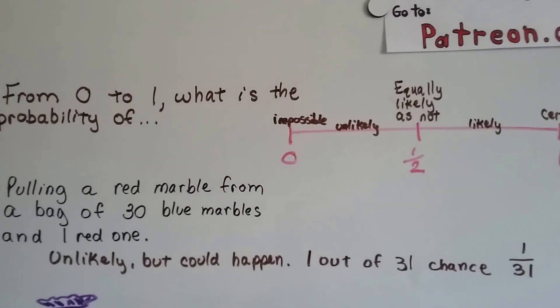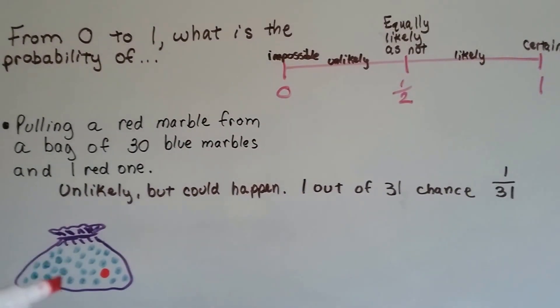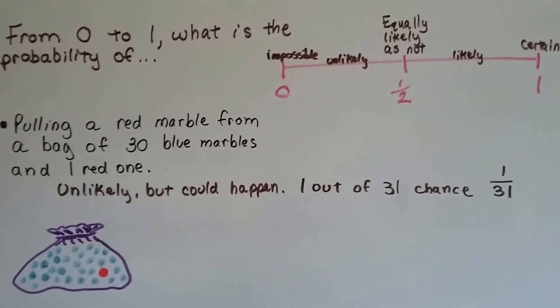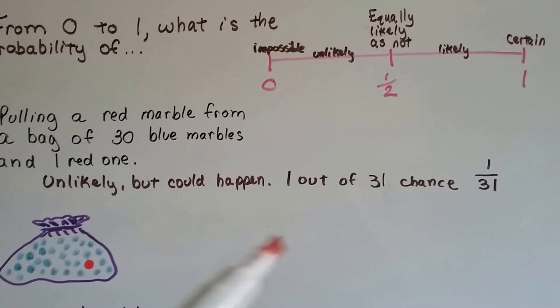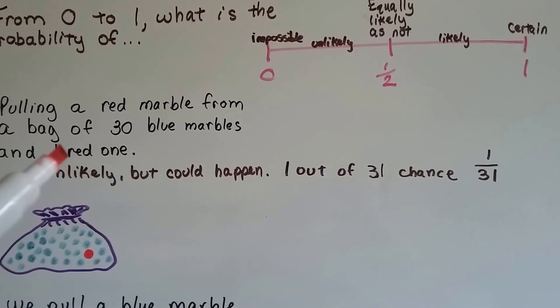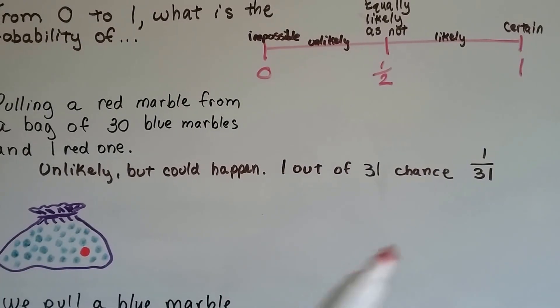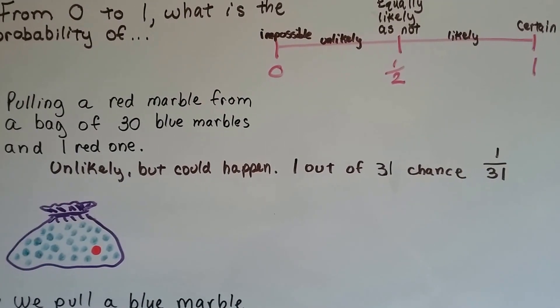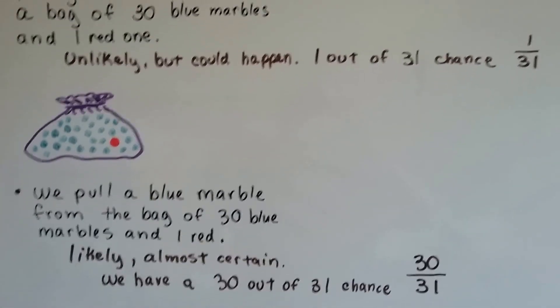So, from zero to one, what is the probability of pulling a red marble from a bag of thirty blue marbles, and there's only one red one? Well, it's very unlikely, but it could happen, you could get lucky. You've got a one out of thirty-one chance. If there's thirty blue and one red, there's thirty-one marbles. And if you're doing one pull, you've got one out of thirty-one chance. So it's very unlikely, but it could happen.